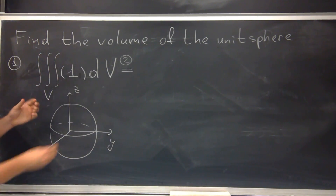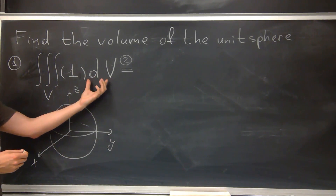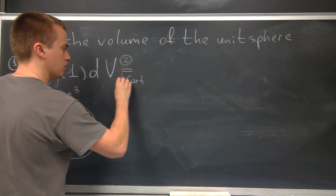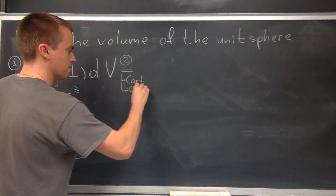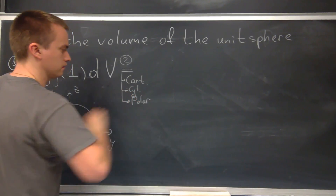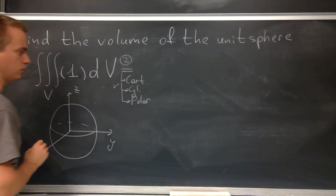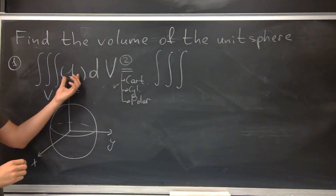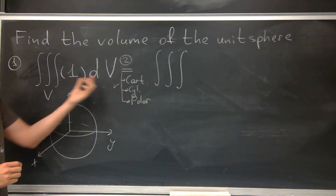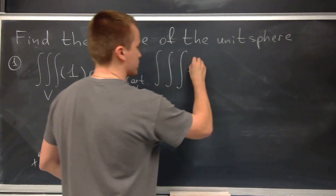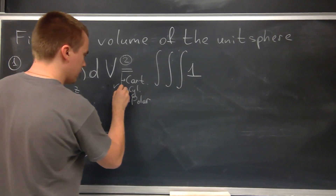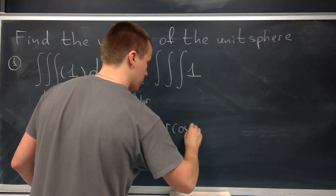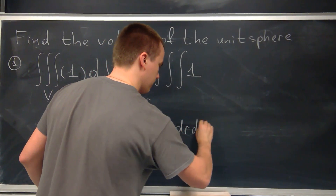For step two, we have this triple integral and we want to express it in some sort of coordinates. We have three choices: Cartesian, cylindrical, and polar. In this video I want to show you how to find the volume by using cylindrical coordinates. Since my function is 1, it is unchanged, but dV in cylindrical coordinates expands as r dr dθ dz.